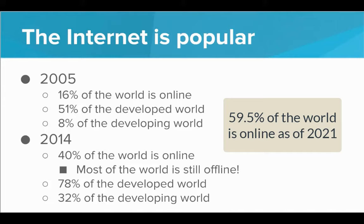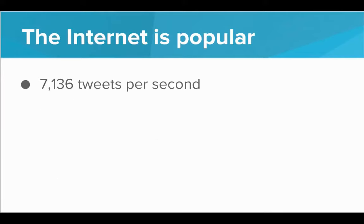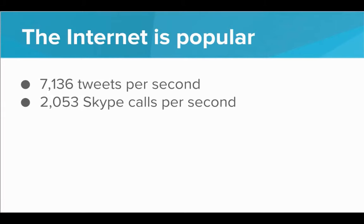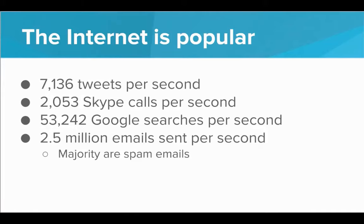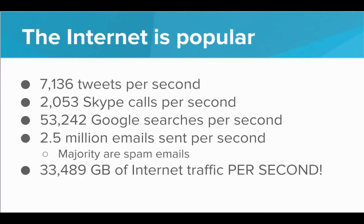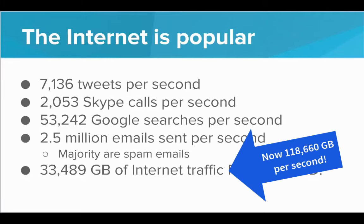Imagine your life without the Internet and consider the pros and cons of that lifestyle. To give you an idea of the massive amount of data flowing through the Internet every day: in one second, there are over 7,000 tweets, over 2,000 Skype calls, over 53,000 Google searches, and about 2.5 million emails — most of which are spam. All in all, there's over 33,000 gigabytes of Internet traffic per second.